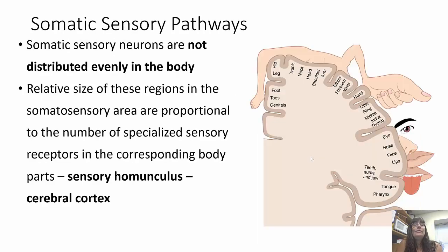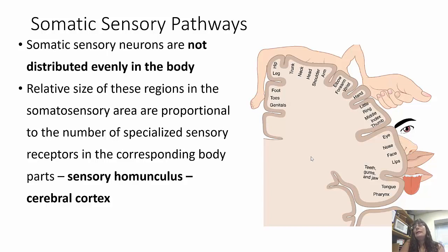Somatosensory neurons are not distributed evenly in the body — this is shown in the somatosensory homunculus. The relative size of these regions is proportional to the number of specialized sensory receptors in that body part. The more receptors, the more brain area dedicated to it. For example, the genitals do not have a lot of dedicated area, but the nose, face, lips, eyes, and tongue have a lot — meaning we have more sensory receptors in those areas.